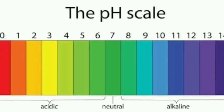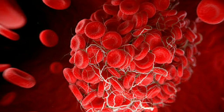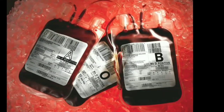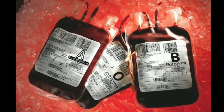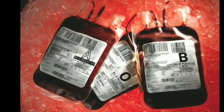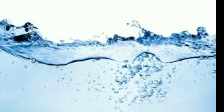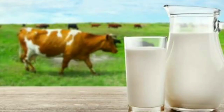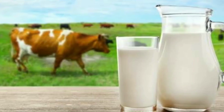First, let's talk about neutral. We have a neutral level of blood. It is 7. We also have milk.